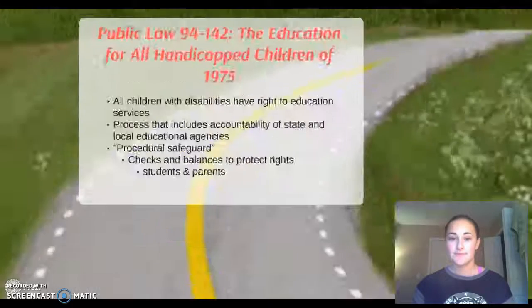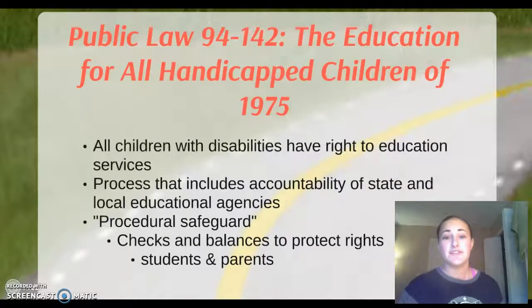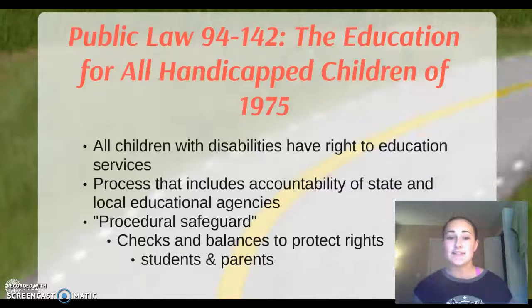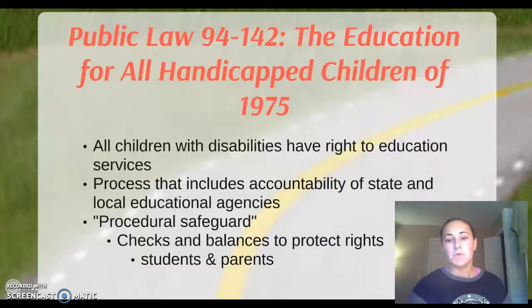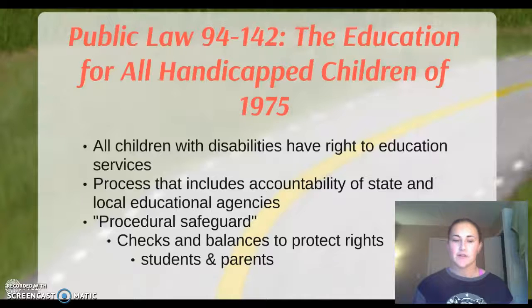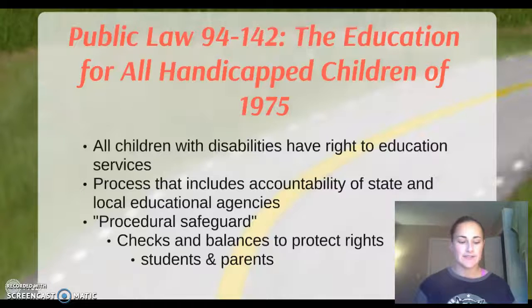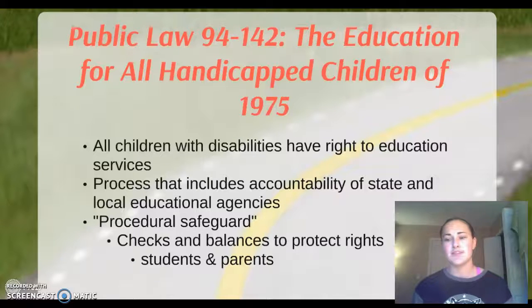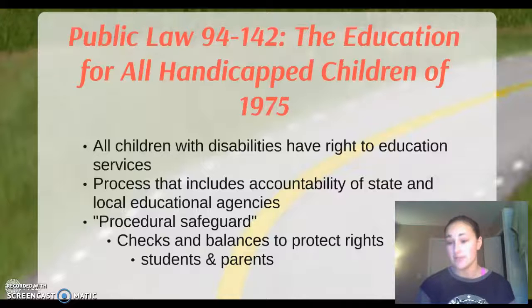Next we move on to Public Law 94-142, the Education for All Handicapped Children Act of 1975. In this act, all children with disabilities have the right to education services. It includes processes for accountability of state and local education agencies, moving from a focus on parental participation and due process toward holding schools and state governments accountable when dealing with cases that may be discriminatory against disabled students.